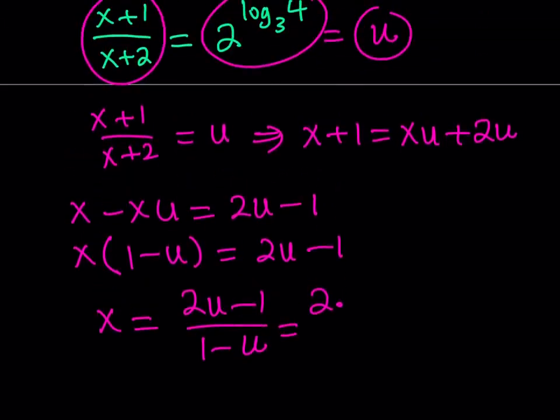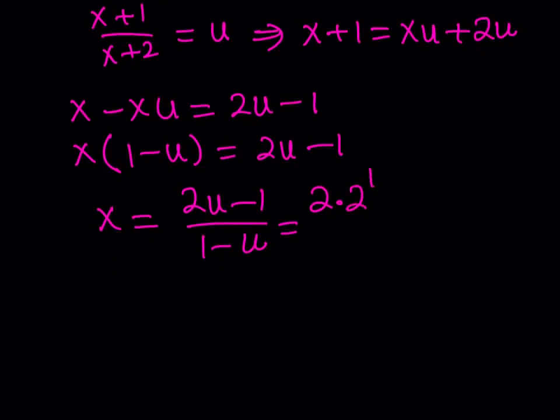Let's go ahead and do it. x = (2 times 2^(log₃4) - 1) / (1 - 2^(log₃4)). This can be simplified a little bit. Let's go ahead and do it.